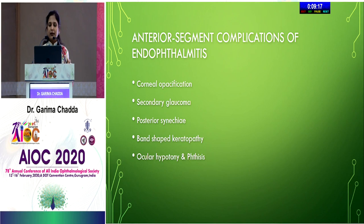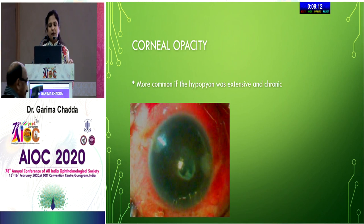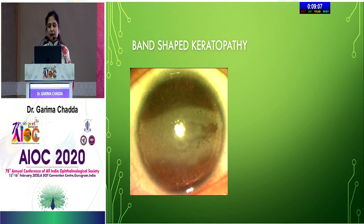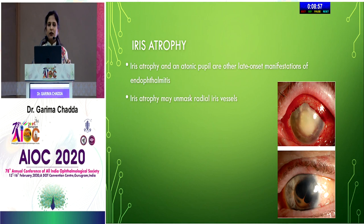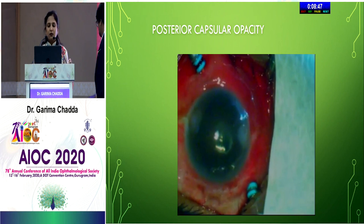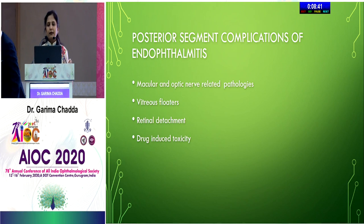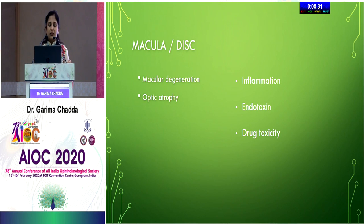Secondary glaucoma is most commonly closed-angle due to peripheral anterior synechia. Iris atrophy and atonic pupils are late-onset manifestations; iris atrophy may unmask radial iris vessels. Posterior capsular opacification is commonly seen. Posterior segment sequelae include macular and optic nerve-related pathologies, vitreous floaters, retinal detachment, and drug-induced toxicities. Macular degeneration and optic atrophy can result from inflammation, endotoxins released by organisms, and the drugs used.